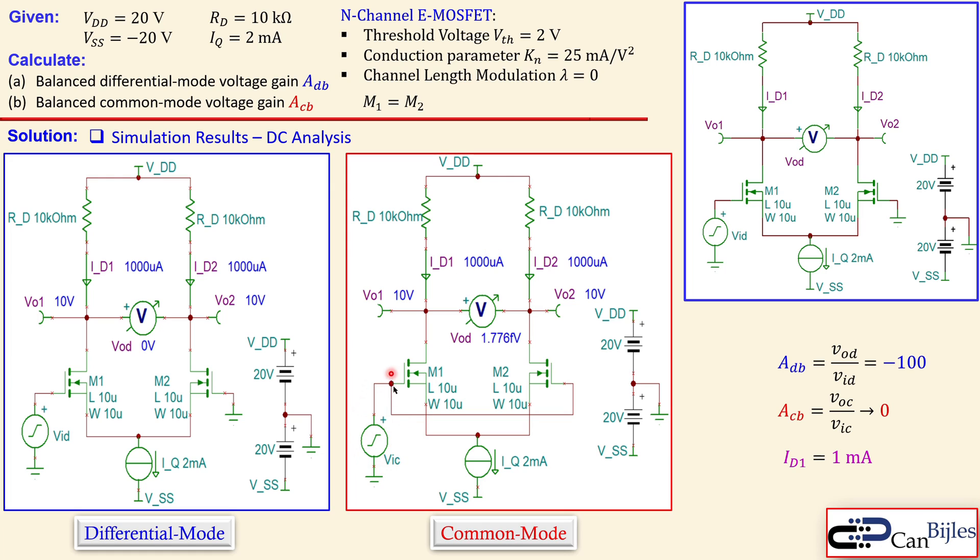You can see that the differential and the common mode in DC analysis work the same. You see here the common mode signal, connected as said before between the two gates here, connected together, and then one source connected here. So we can say this is perfectly fine for our drain currents.